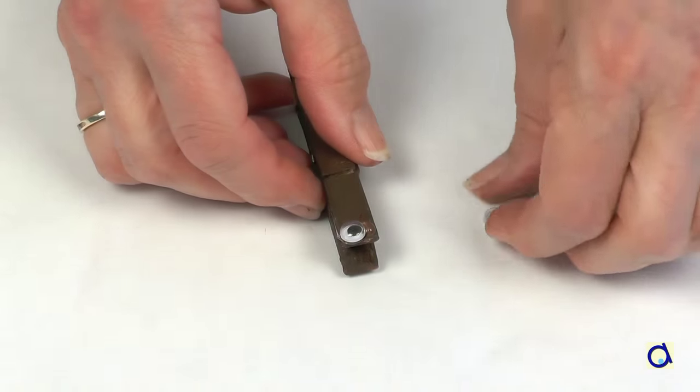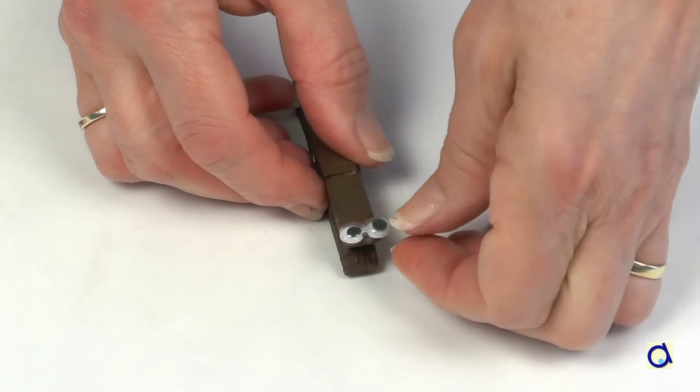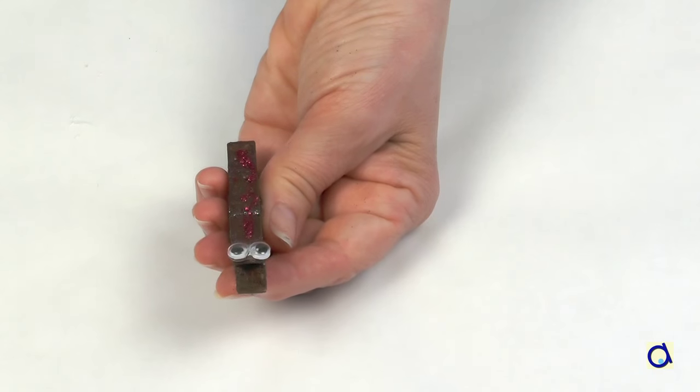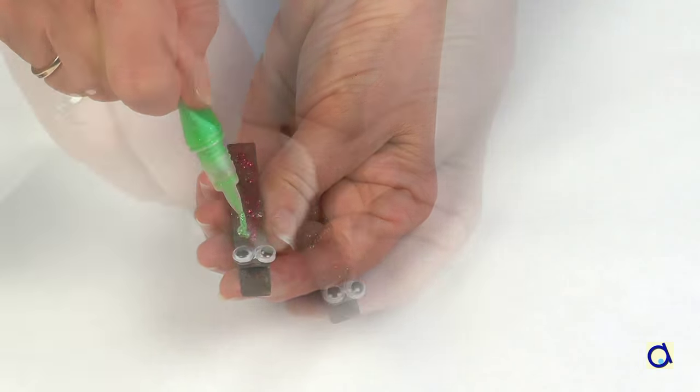Then glue two googly eyes on top of the clothespin near the opening. If you wish, you can also decorate the body using glitter glue.